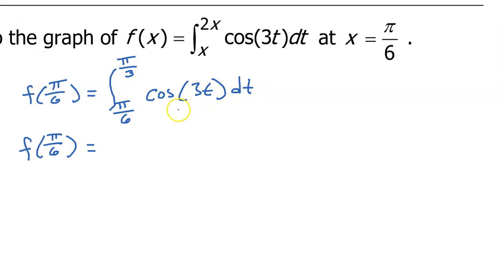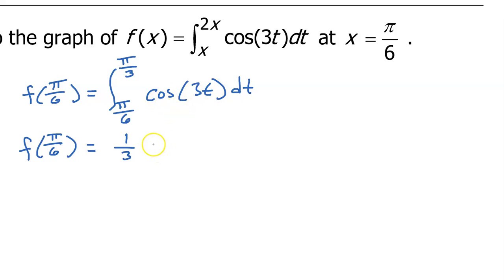To integrate this, I'm about to do a little mental u substitution. Imagine that u is 3t. That means u prime is going to be 3. Whenever u prime is just a constant, we know we will end up dividing by that constant. So I'm going to end up with a one-third out in the front. Now I can just do the anti-derivative of cosine, which is sine — so I can just write the sine of 3t. And here come the limits of integration from pi over 6 to pi over 3.